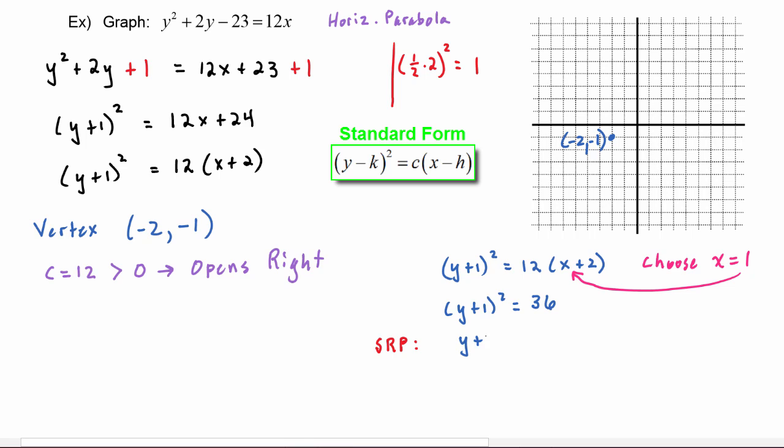Because now by the square roots property, we get that y + 1 has to be plus or minus six. Well this is two equations, so we have y + 1 = 6 or y + 1 = -6. Solving this first equation we get y = 5. Solving the second equation we get y = -7.